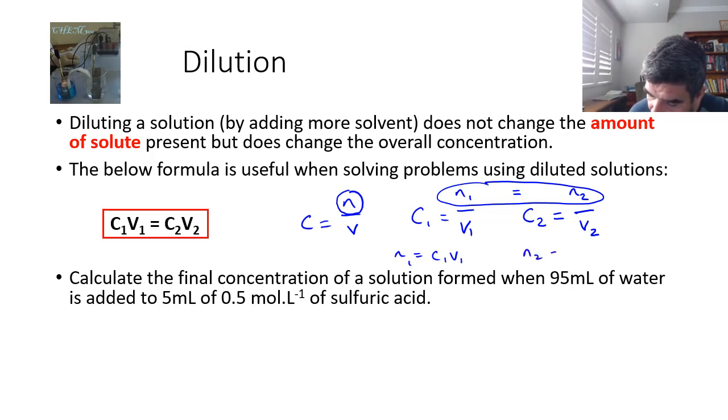So if we rearrange these equations, then if these two things are equal, then it stands to reason that these two things must also be equal. And in fact, that's how we get this little equation over here. C1 V1 equals C2 V2.